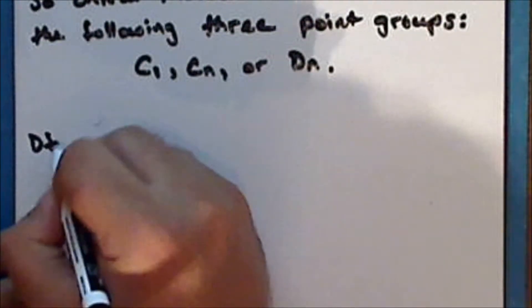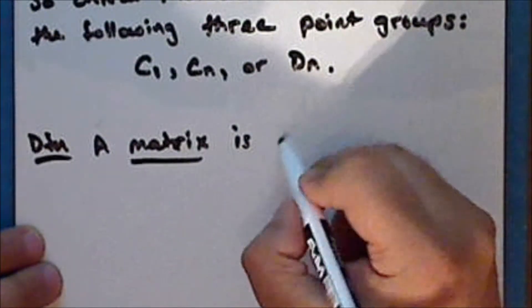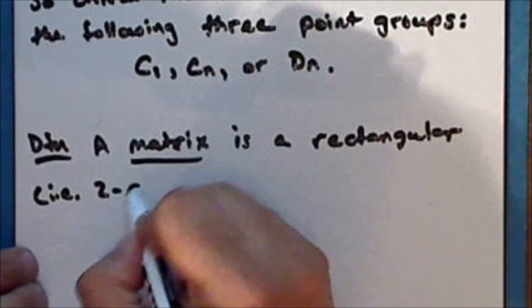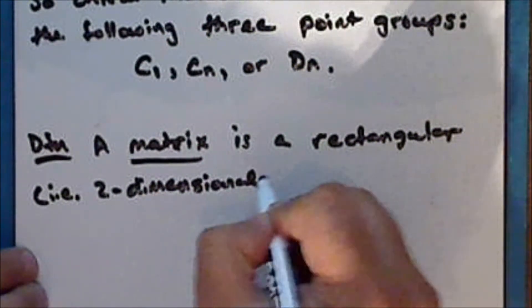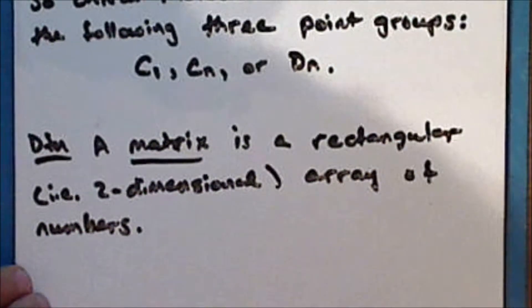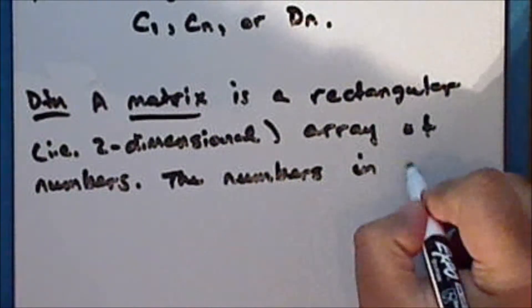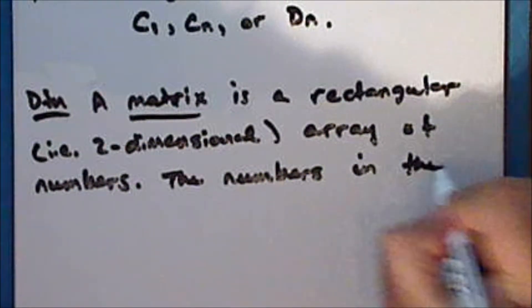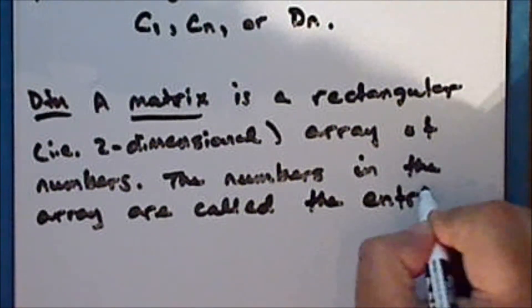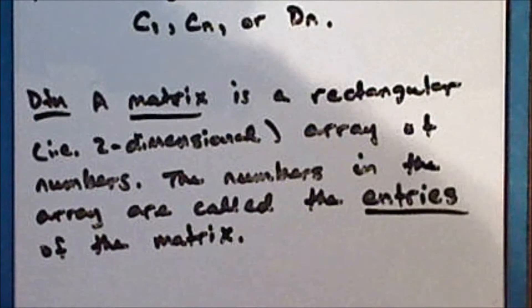So, what is a matrix? A matrix is a rectangular, that is, two-dimensional array of numbers. Later, we will study multidimensional arrays called tensors. The numbers in this array are called the entries of the matrix.